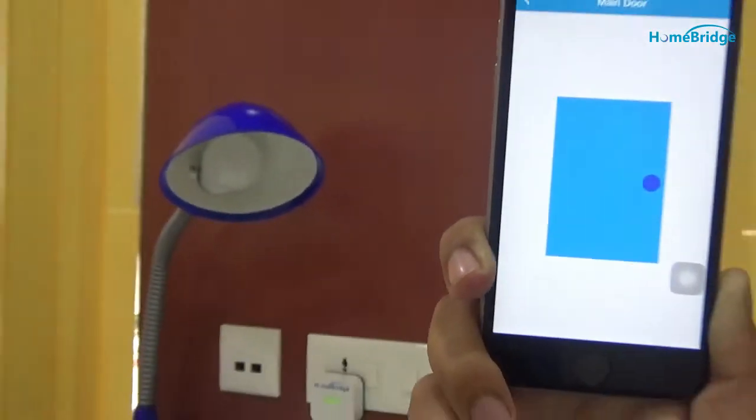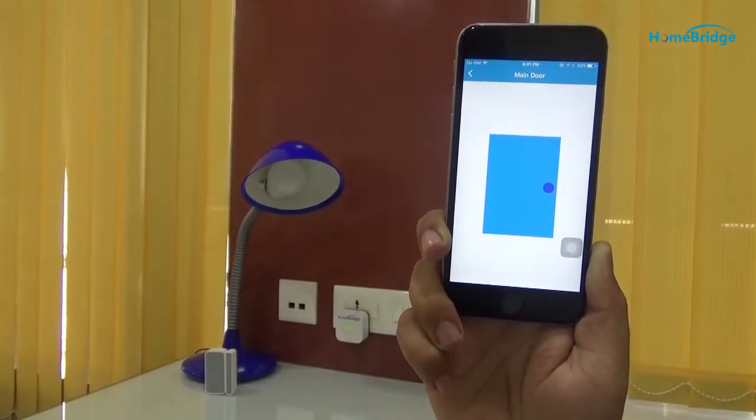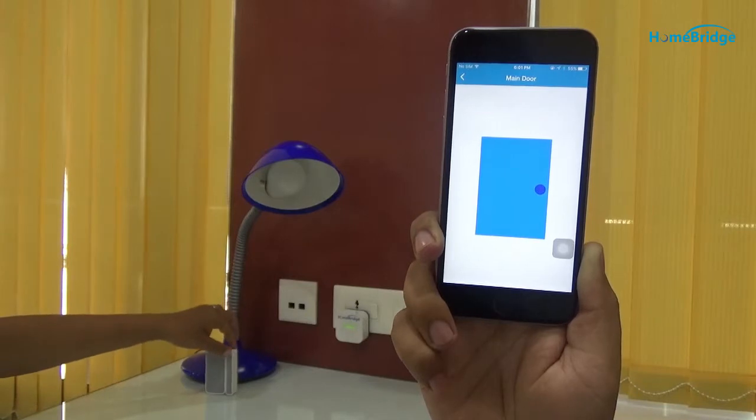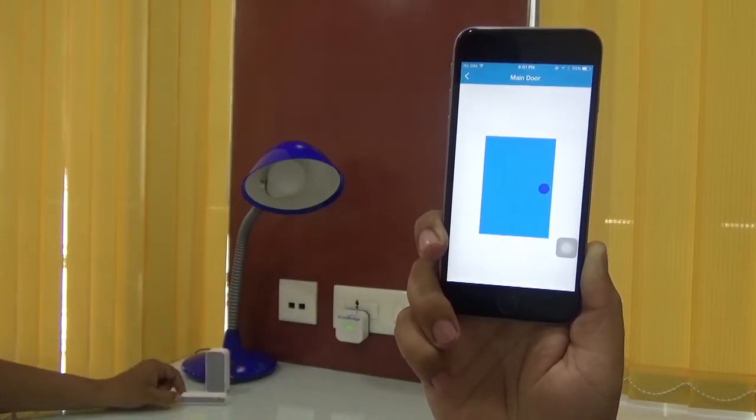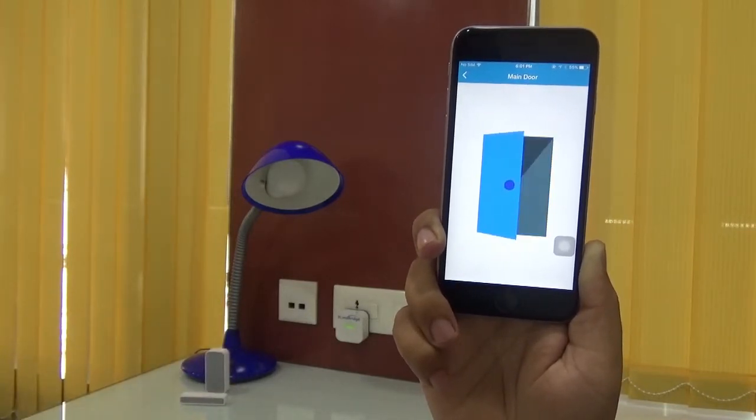You can see front door is closed here, so it shows closed door in the application. Let's open the door. You will see it open in the application also. It's open now.